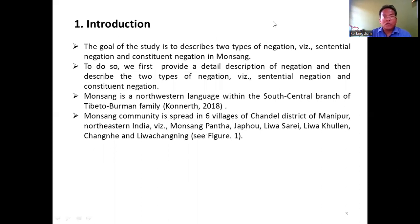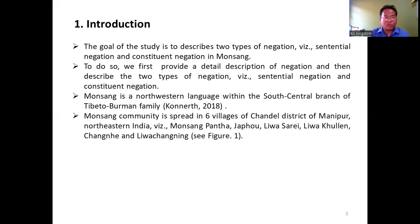Introduction. The goal of the study is to describe two types of negation, that is sentential and constituent negation in Monsang. To do so, we first provide a detailed description of negation, and then describe the two types of negations — namely, sentential negation and constituent negation. Monsang is a northwestern language within the south central branch of the Tibeto-Burman family, taken from Kona 2018.